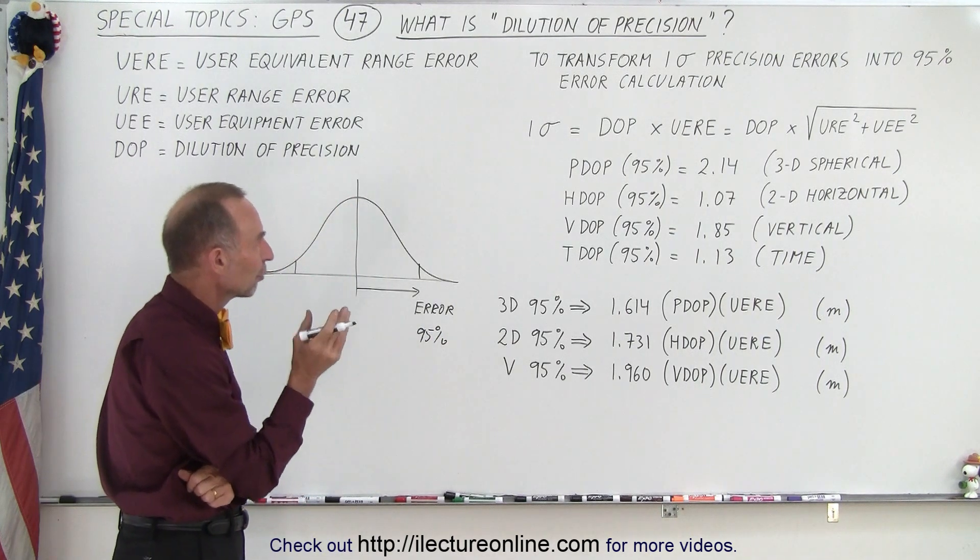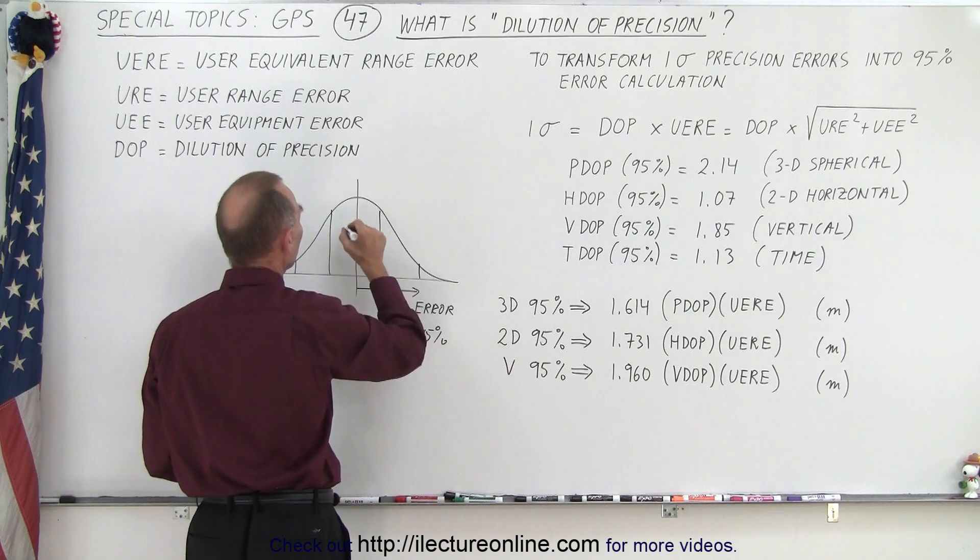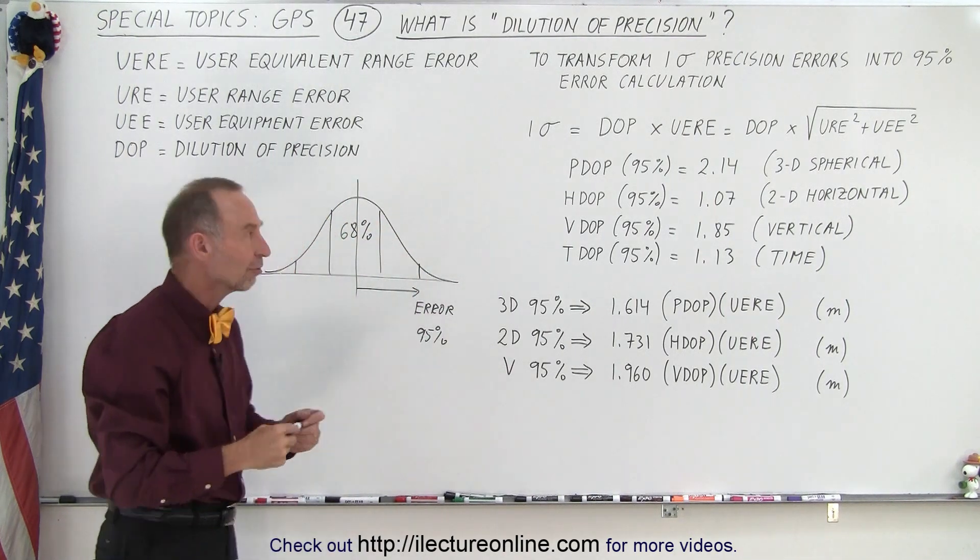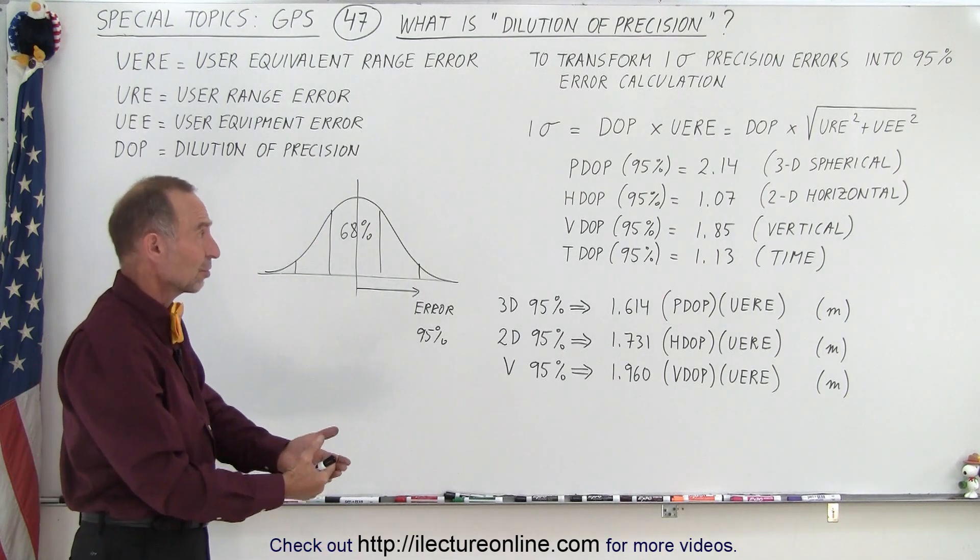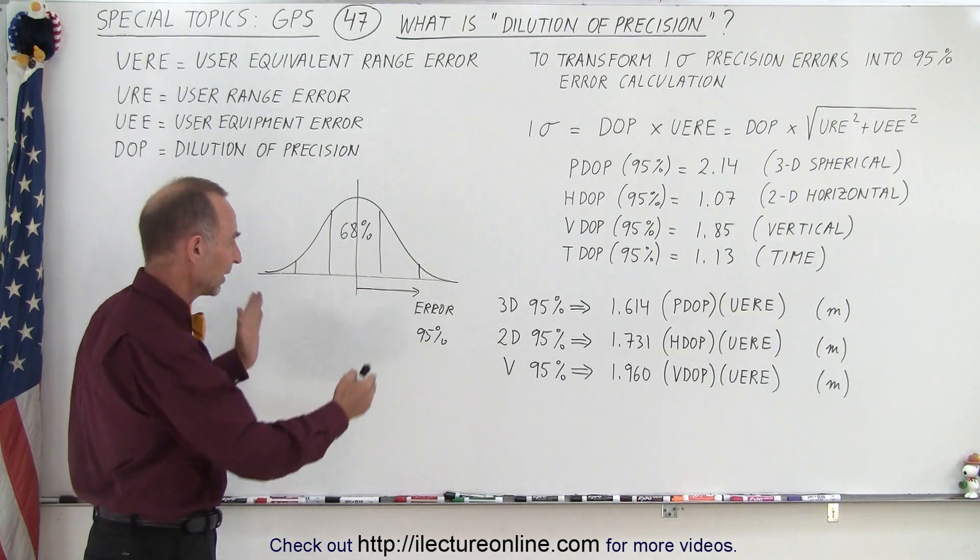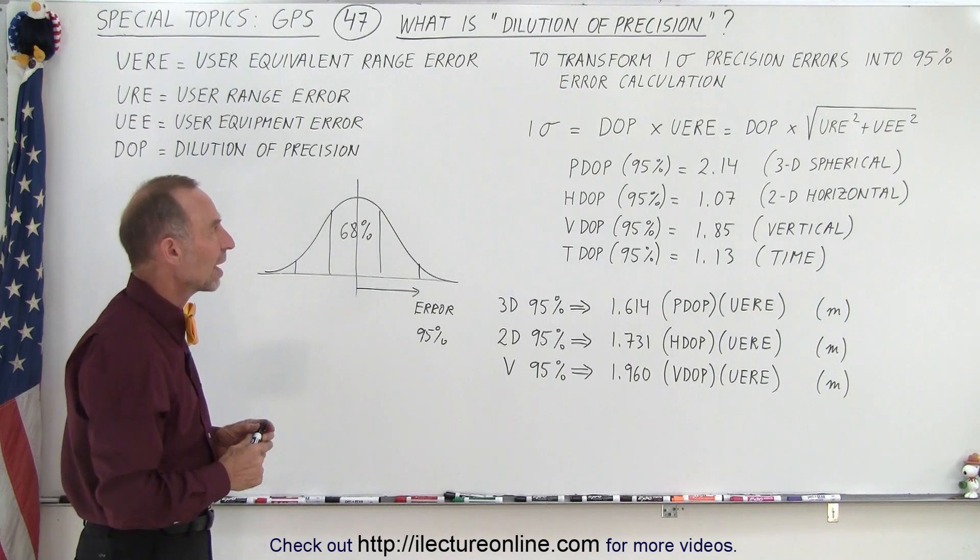Well, in that respect, what we first do is we calculate a single sigma. And of course, when we have a single sigma, we have about 68% of all the readings, all the measurements, that fall within that range. And that, of course, is not good enough. If only 68% of your range measurements fall within what you expect, that would not be good enough. You want at least 95% of your range measurements to fall within expected values.